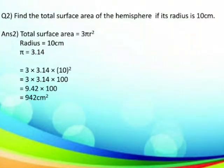The next question says: find the total surface area of a hemisphere if its radius is 10 cm. We know that the formula for total surface area of a hemisphere is 3π r². Here, r = 10 cm and π = 3.14. On putting the values, we get 3 × 3.14 × 10², that is 3 × 3.14 × 100, which gives us 942 cm². Thus, the total surface area of a hemisphere with radius 10 cm is 942 cm².